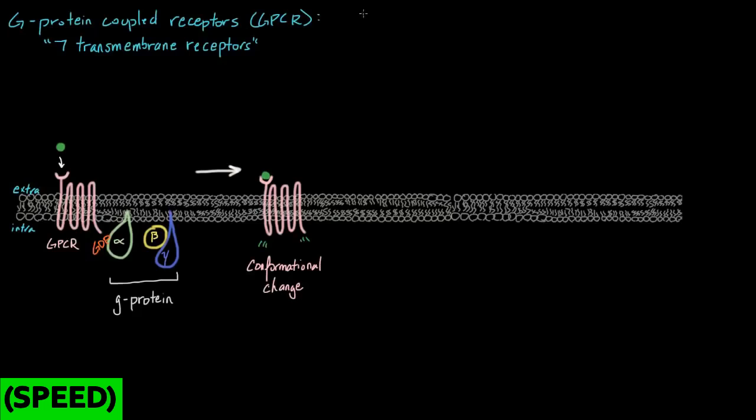Okay, so let's just write out our first two steps real quick. So step one, we have the ligand binds to our GPCR. Step two, we said that we undergo a conformational change. So our GPCR undergoes conformational change.